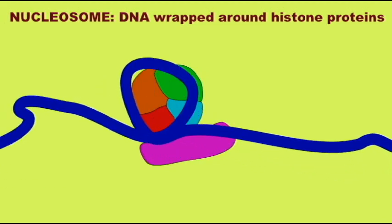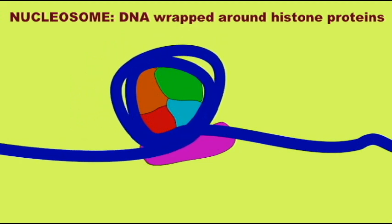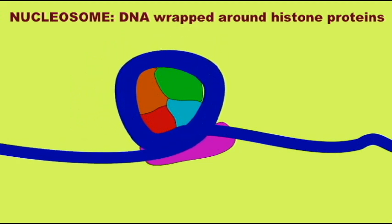Eukaryotes will need time to remove and replace histones and do not respond as quickly. There are five major types of histones which are highly conserved among all eukaryotic organisms.